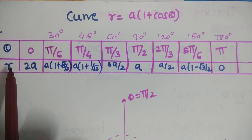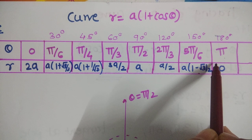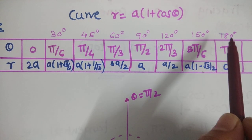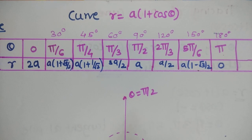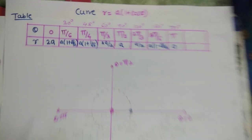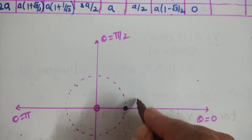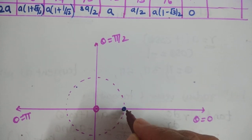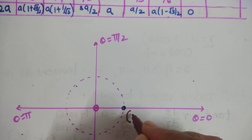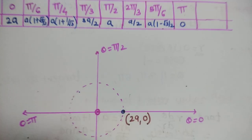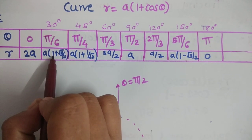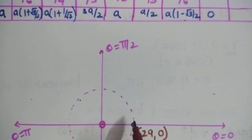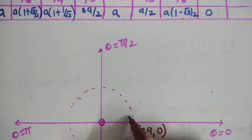Since the curve is symmetric about the initial line θ = 0, whatever the curve is above the line θ = 0, the same curve appears below it. At θ = 0, the point is (2a, 0). At θ = π/6, the radius is a(1 + √3/2), which is less than 2a, lying within the circle.